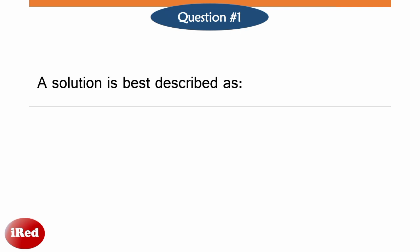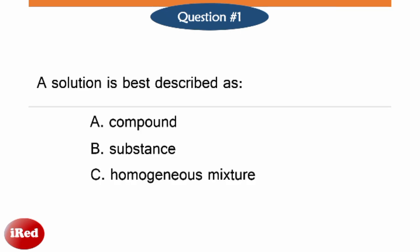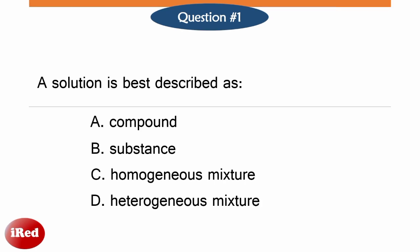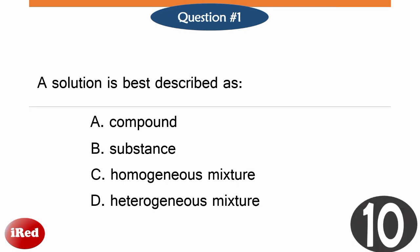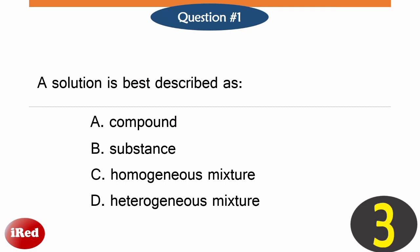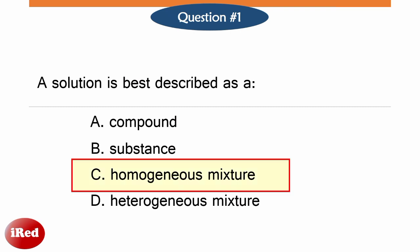Number 1. A solution is best described as: A compound, B substance, C homogeneous mixture, or D heterogeneous mixture. A solution is a mixture because it contains two or more substances physically combined. It is a homogeneous mixture because a solution has only one or uniform appearance.